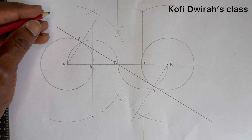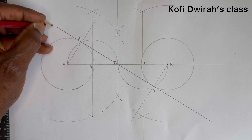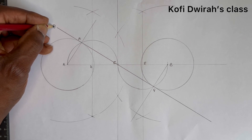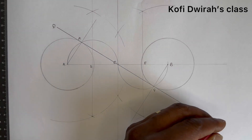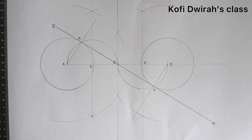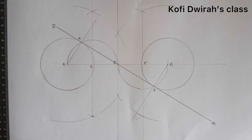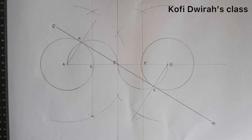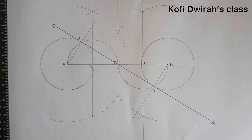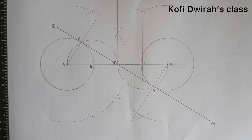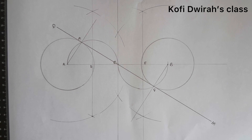We label this line as QM — so QM is the tangent. This is how to construct a common internal tangent to two equal circles.